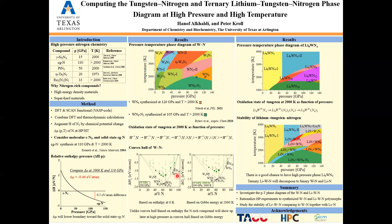This is evident for WN6 and WN10 — they do appear at 50 gigapascals in the Gibbs energy convex hull, while they do not appear in the enthalpy-based one. Another part of this work focuses on the ternary lithium tungsten nitrogen system. Here we investigated the phase diagram of Li6WNx, keeping the ratio of lithium to tungsten at 6 to 1 and increasing the ratio of nitrogen from 4 to 6 to 8 and so forth. Looking at the oxidation state through the phase diagram, we maintain a high oxidation state of tungsten.